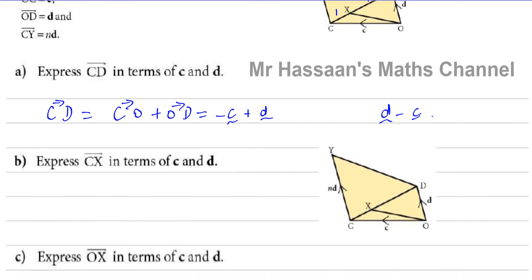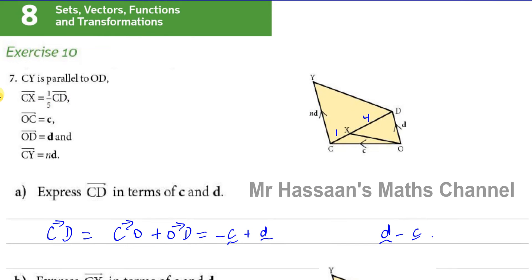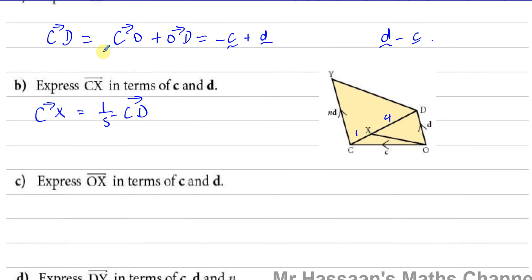Part B asks us to express CX in terms of c and d. CX is one-fifth of CD, as stated in the question. Since we found CD equals d minus c, CX equals one-fifth times (d minus c), which can also be written as one-fifth d minus one-fifth c.